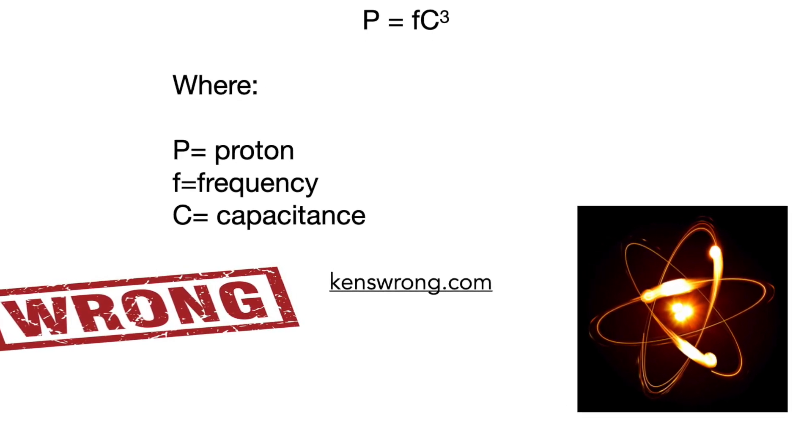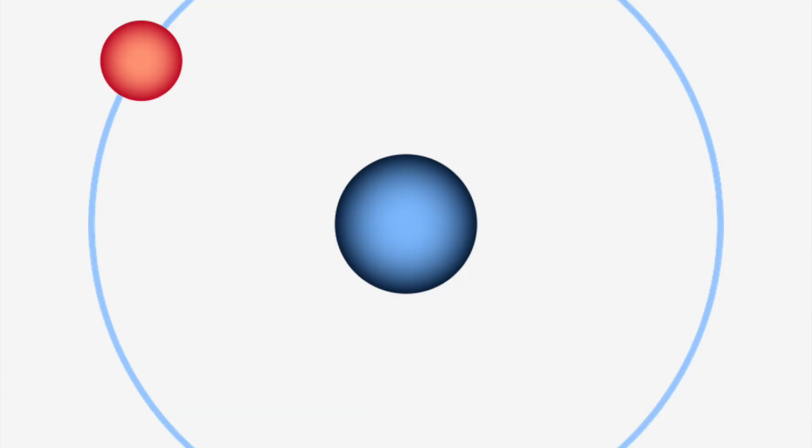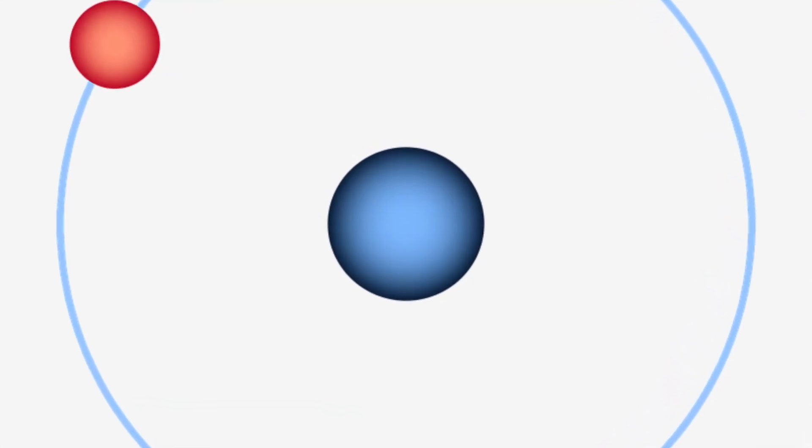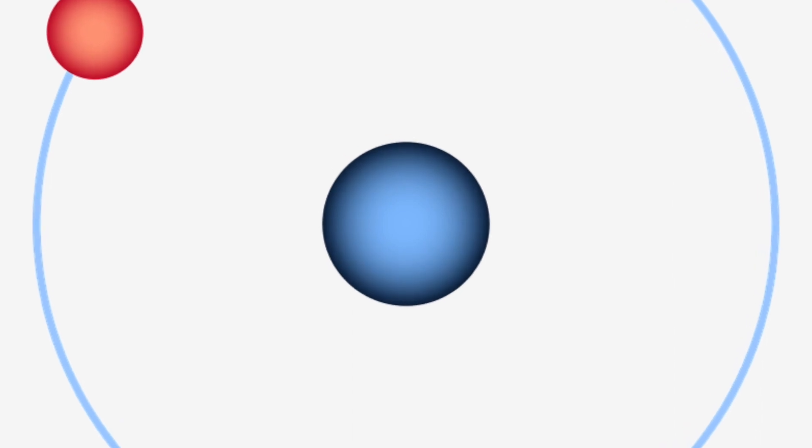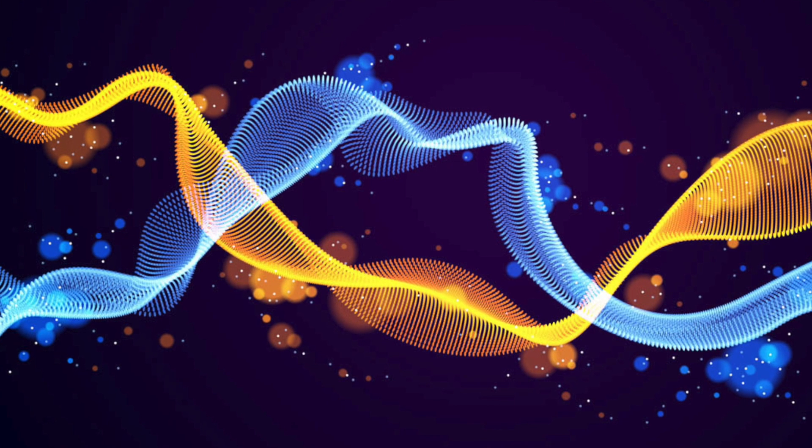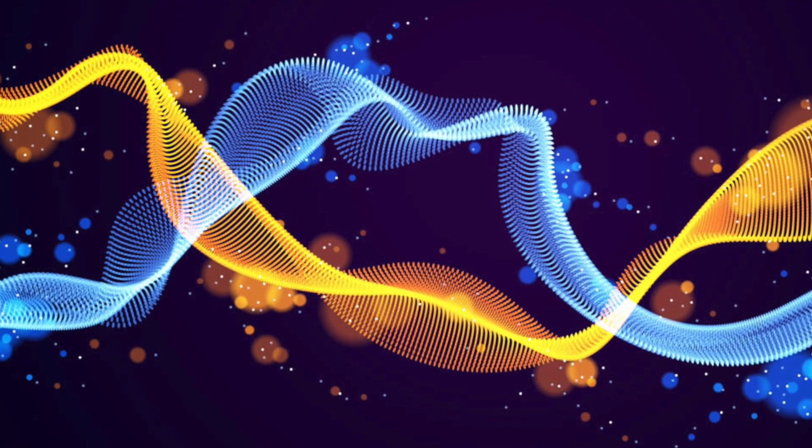This equation has several flaws. Ken Wheeler defines proton as hydrogen or zero hysteresis EMR, electromagnetic radiation. Electromagnetic radiation, light,